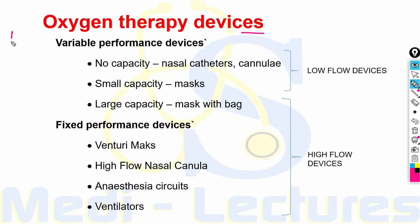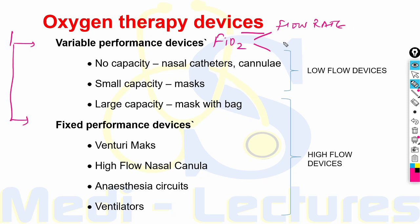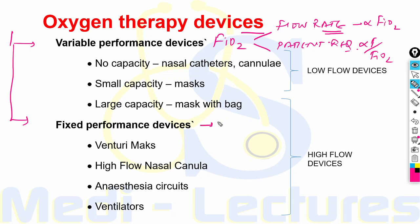Coming on to oxygen therapy devices, there can be variable performance devices or fixed performance devices. Variable performance devices have a variable FiO2 which varies according to the oxygen flow rate and the patient's requirements — when flow rate increases, FiO2 increases; when patient requirement increases, FiO2 decreases. Fixed performance devices have a fixed FiO2.